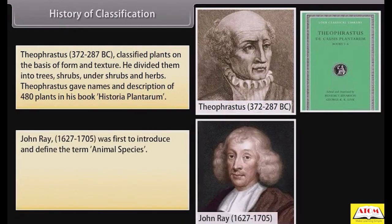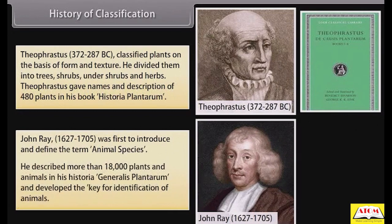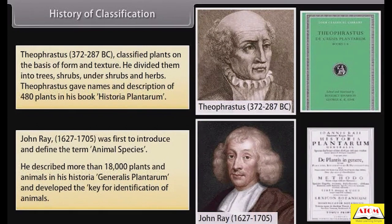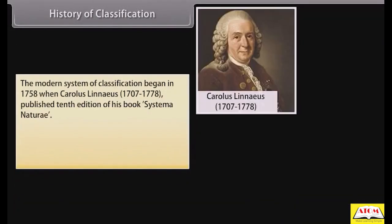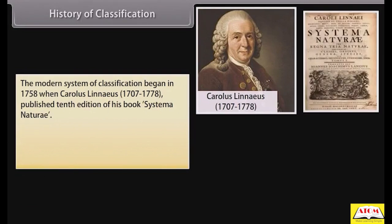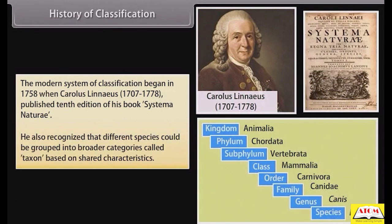John Ray (1627–1705) was the first to introduce and define the term animal species. He described more than 18,000 plants and animals in his Historia Generalis Plantarum and developed a key for identification of animals. The modern system of classification began in 1758 when Carolus Linnaeus (1707–1778) published the 10th edition of his book Systema Naturae. He also recognized that different species could be grouped into broader categories called taxa, based on shared characteristics.